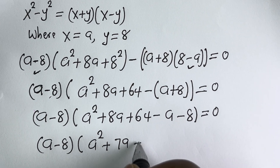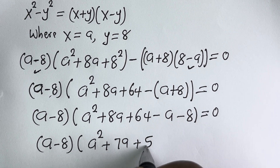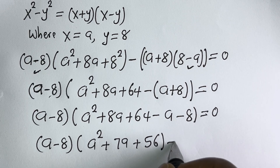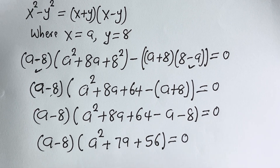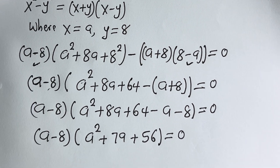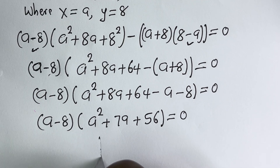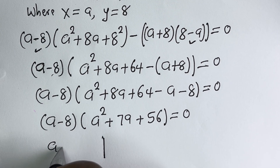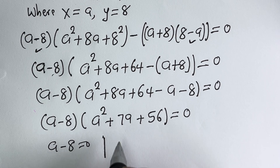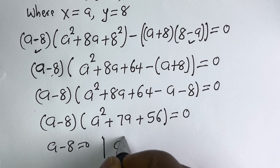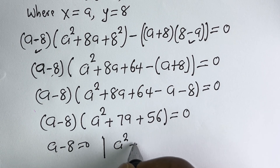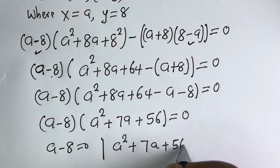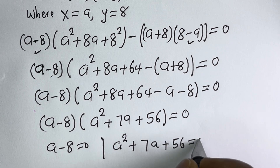Simplifying inside the bracket gives A² + 7A + 56. So there are two cases: the first case is A minus 8 equals 0, and the second case is A² plus 7A plus 56 equals 0.